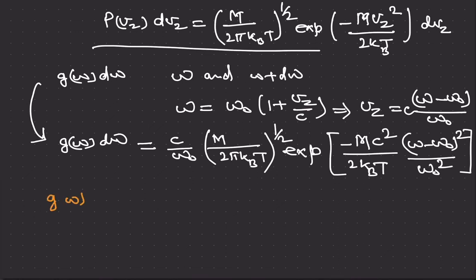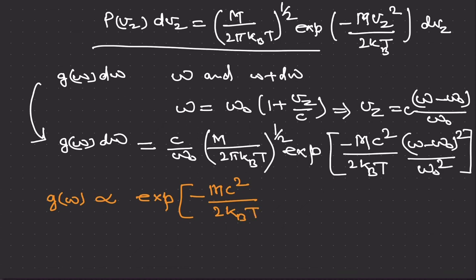The total probability expression corresponds to a Gaussian distribution. The line shape function is peaked at Ω₀. We can calculate the full width at half maximum for this Gaussian distribution. The Gaussian distribution G(Ω) is directly proportional to exp[−(Mc²/2kT) × (Ω − Ω₀)²/Ω₀²].